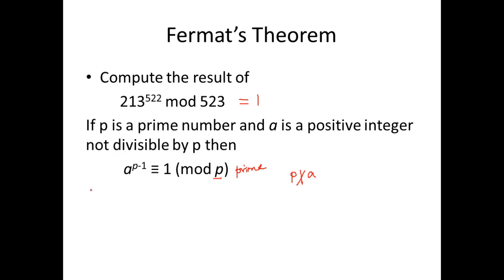Otherwise, how can you write this? This is nothing but a power p minus 1 mod p is equivalent to 1 mod p. So what I have applied here: a is congruent to b mod p can be written as a mod p is equal to b mod p.